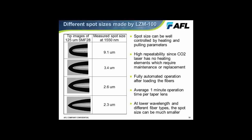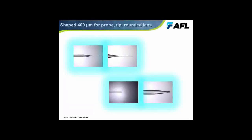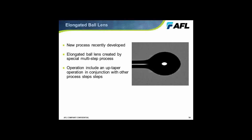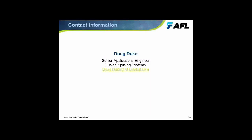We can achieve different spot sizes by changing the tip shape. Other tip shapes that can be achieved include combining tapers, probes, and lens elements on the ends of tapers — the varieties are almost infinite. More recently, we developed a new process for an elongated ball lens, created by a special multi-step process including an up taper in conjunction with more conventional lensing operations. Hopefully I've given you a sense of the variety of things that can be done in the glass processing arena — this is a good cross-section of examples developed for the divergent needs of different industries and applications. Thank you for your attention.